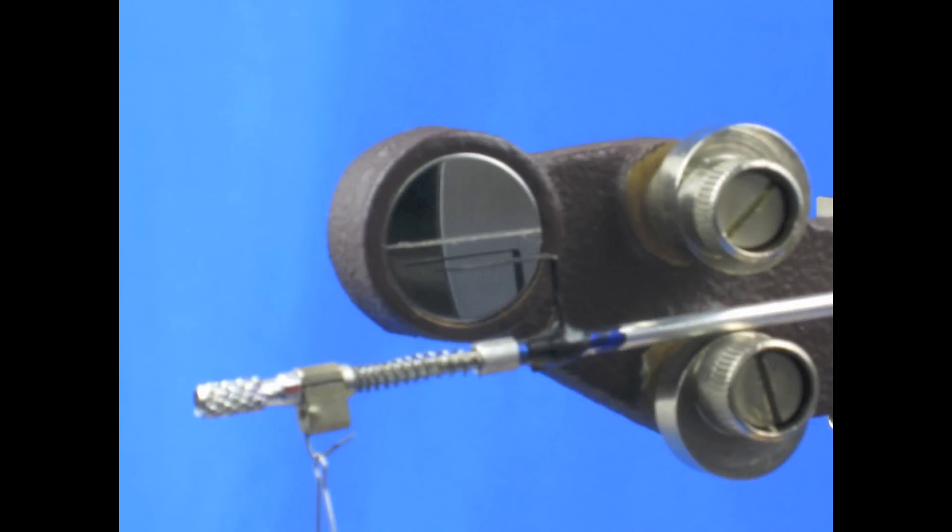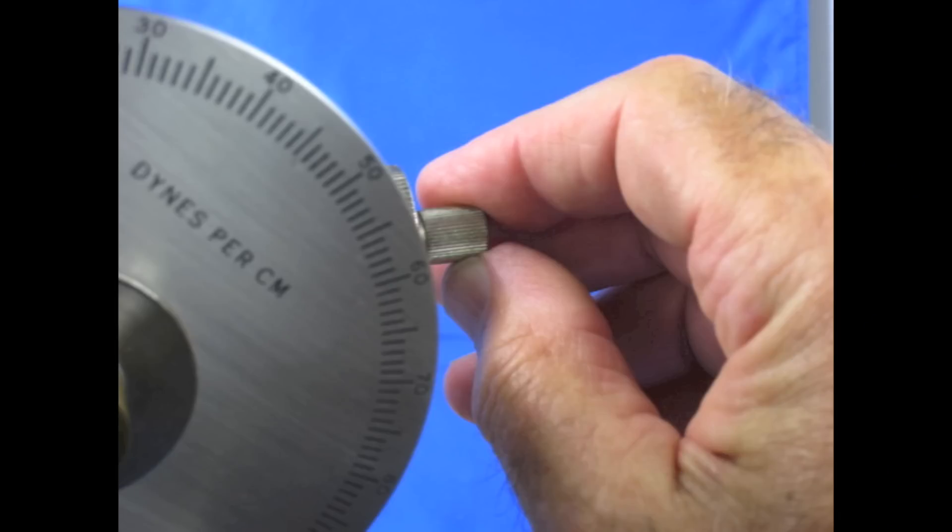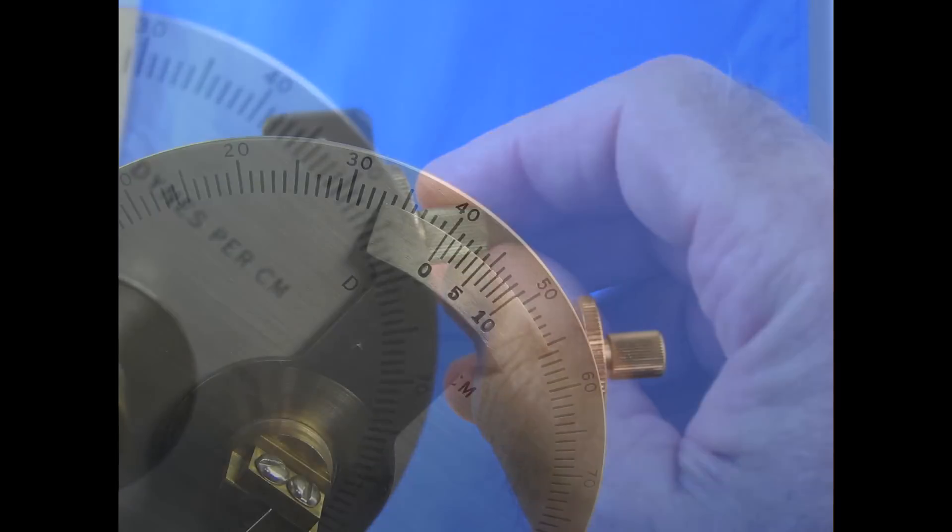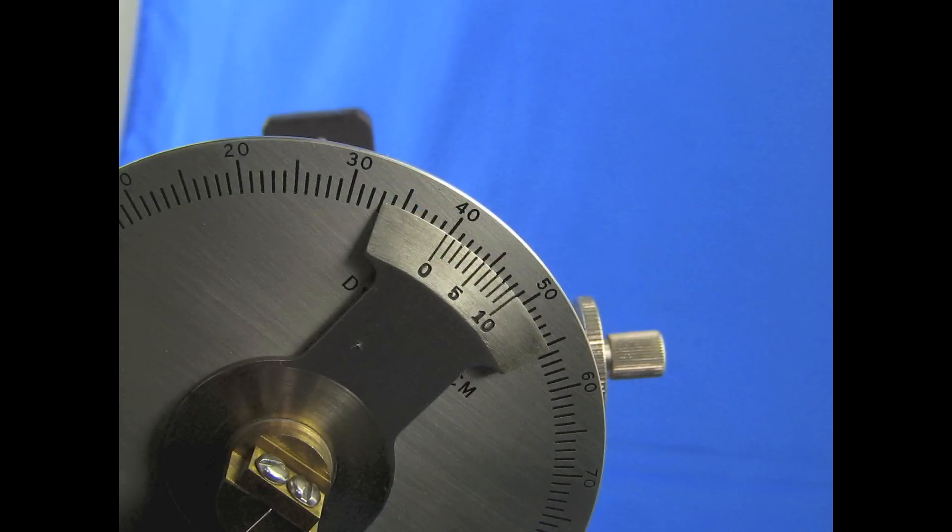This will again pull down the torsion arm, moving the pointer below the mirror line. Again using the adjustment knob, move the pointer back up to the mirror line. Now read the dial where the vernier line matches and record the dial reading.